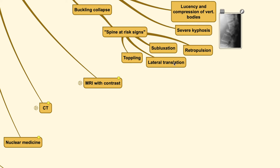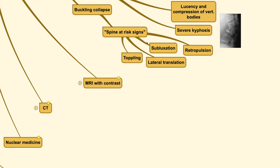The spine at risk signs include toppling of the vertebral body, subluxation, any evidence of retropulsion, and also lateral translation. When you see these signs, the spine is highly risky and a buckling collapse could develop.